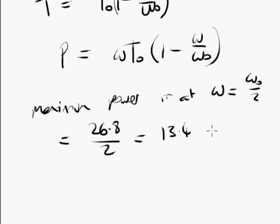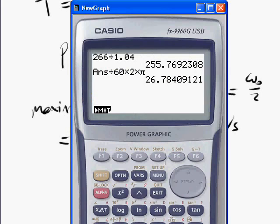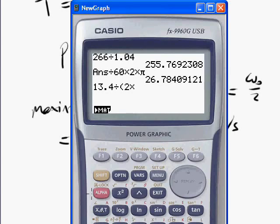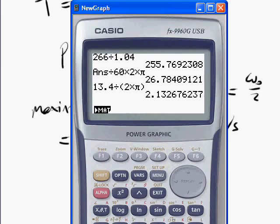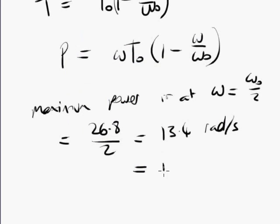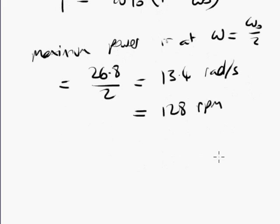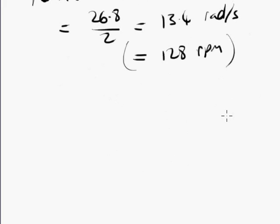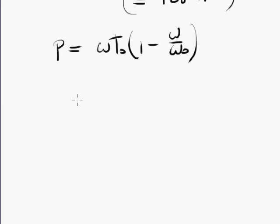And that is 26.8 rads per second over 2 is 13.4 radians per second. And let me convert that back into RPM so that we can check it out on the original graph, which was in RPM. It's 13.4 radians per second divided by 2 pi. It's that many revolutions per second. Times 60 is just under 128 revolutions per minute.